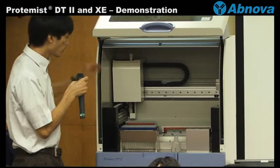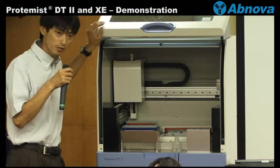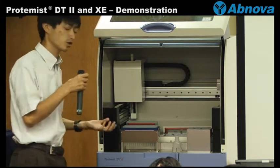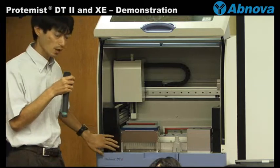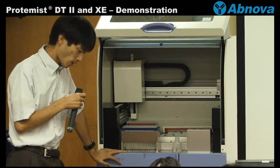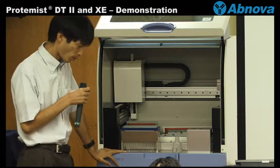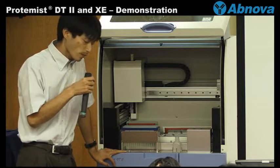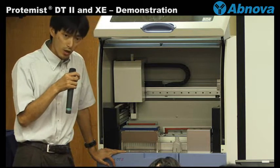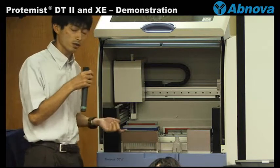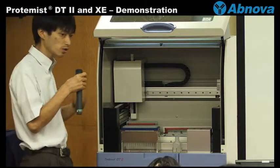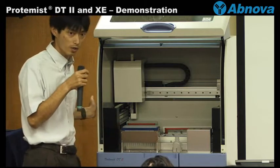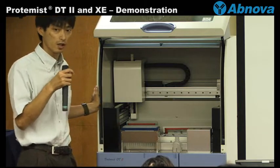And this will complete six samples for one run, so that you can get six different proteins per run. And if you choose another program for translation at 26 degrees for eight hours, it takes about 23 hours including transcription, translation, and purification. So that the next day you can get the purified protein. It's very easy and very quick. You can save the labor.